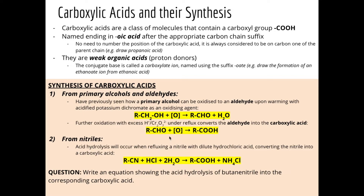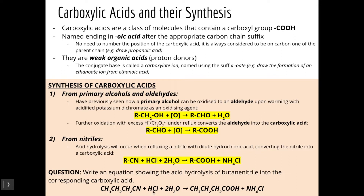So butanenitrile — we've got our one, two, three, four carbons in our nitrile group. Then we just do the same equation: hydrolysis, two molar equivalents of water with the acid — because it's the acid hydrolysis — we convert to the corresponding carboxylic acid, which is butanoic acid, and then ammonium chloride as well.